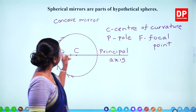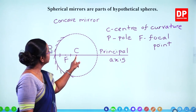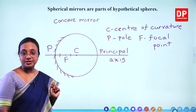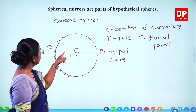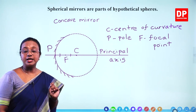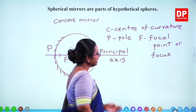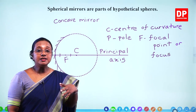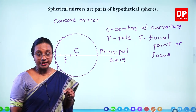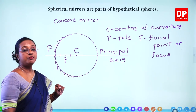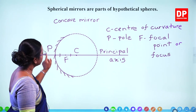Between P and C there is a certain distance. The exact midpoint between them, where these two distances are equal, is labelled as the focal point, capital F. So in a concave mirror: P is the pole, C is the centre of curvature, and F is the focal point — midway between them. We can also call it the focus.